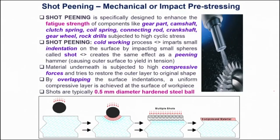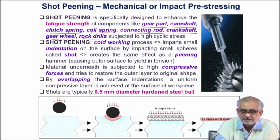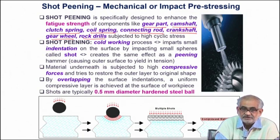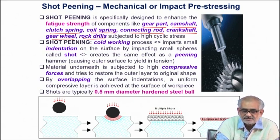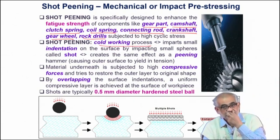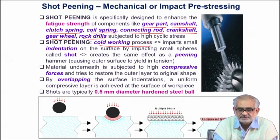Shot peening using impacting spherical shots can enhance fatigue strength on typical engineering components like gear parts, camshafts, clutch springs, coil springs, connecting rods, crankshafts, and rock drills — all kinds of rotating members where fatigue is a standard mode of failure. Creating residual compressive stress onto the surface can defer and in some cases even prevent crack growth or fatigue failure. It is a cold working process, done at room temperature, so deformation effects are retained on the sample.